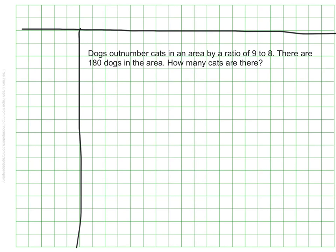So let's take a look at what we know. We know that dogs are represented here by our 9, and cats are represented by our 8, and we know that there are 180 dogs. Our job is to figure out how many cats there are. We're going to set this up as a proportion.